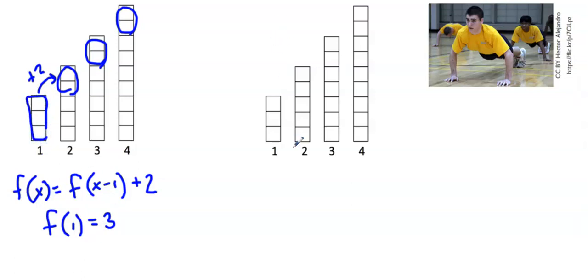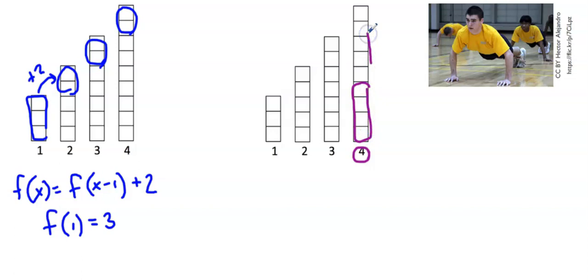Whenever I'm creating an explicit equation, I want to relate the day number to the number of push-ups — not going from one day to the next, but relating the day directly to the push-up count. So here the day is four, so I'm going to look for groups of four. I have one group of four, two groups of four, and then one extra.